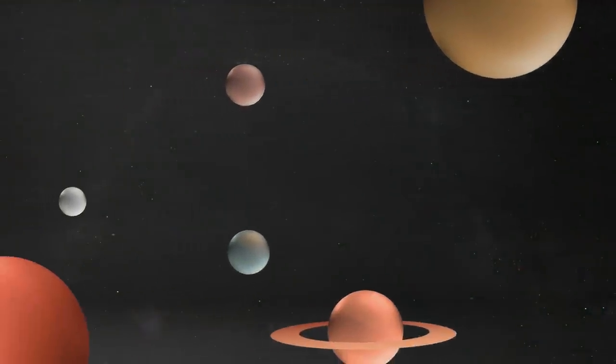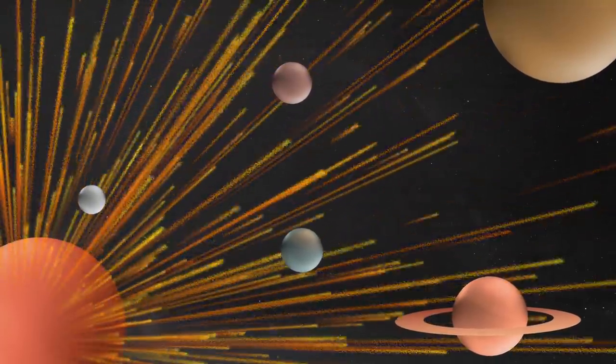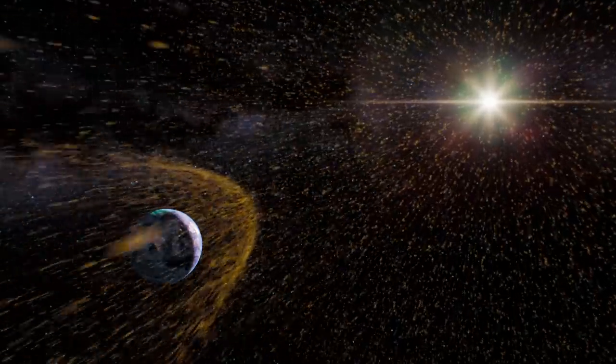There are a few ways to think about the edge of the solar system. One is with the extent of the solar wind. This is the constant flow of charged particles gushing out of the sun at a million miles per hour and bathing the planets.